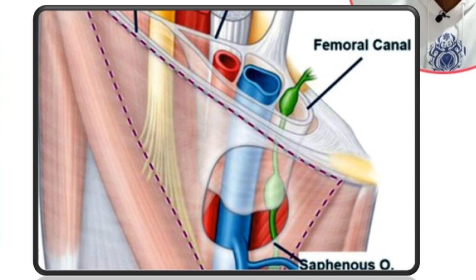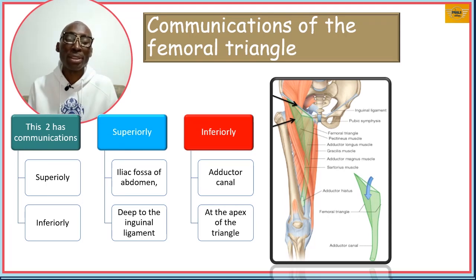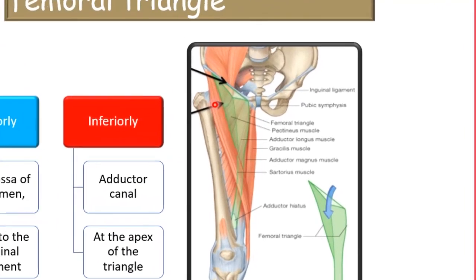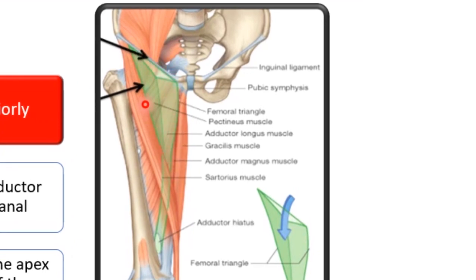We will consider the communications of this triangle. Superiorly, deep to the inguinal ligament, the femoral triangle communicates with the iliac fossa of the abdomen. Inferiorly, from the apex, it communicates with a canal called the adductor canal. So there are two communications: superiorly with the iliac fossa, and inferiorly with the adductor canal.